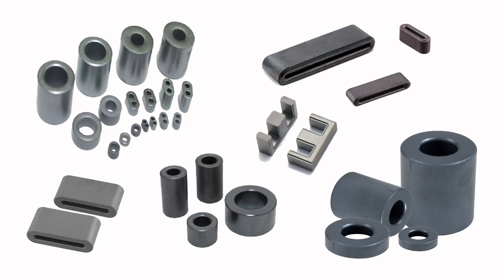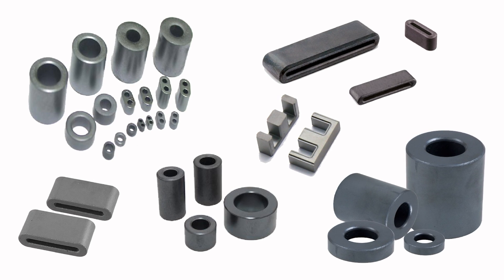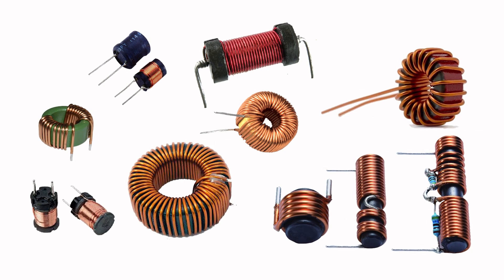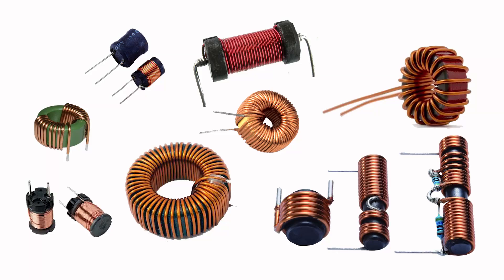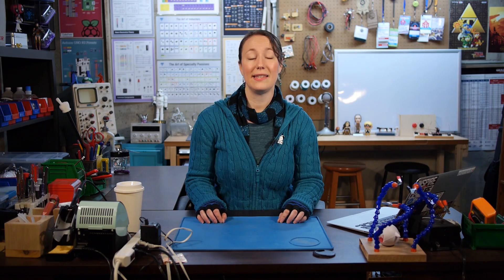Some inductors have ferrite cores. Ferrite is an iron product that, when used in cores, has similar characteristics as iron core inductors. Ferrite cores are non-metallic, giving them a higher resistance than iron cores, and therefore they do not suffer the same power losses at high frequencies. This makes ferrite core inductors better suited for higher frequency applications, such as computers and telecommunications systems.